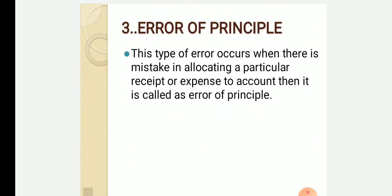Third is error of principle. Error of principle means this type of error occurs when there is a mistake in allocating a particular receipt or expense to an account. When something is incorrectly categorized or allocated, it is called error of principle.